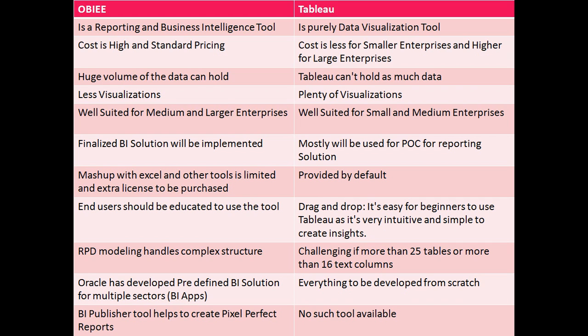OBAE has RPD modeling with three layers of metadata: the physical layer, business layer, and presentation layer. Tableau is completely different. The challenge with Tableau is that if there are more than 25 tables or more than 16 columns per table, it will be difficult to configure.